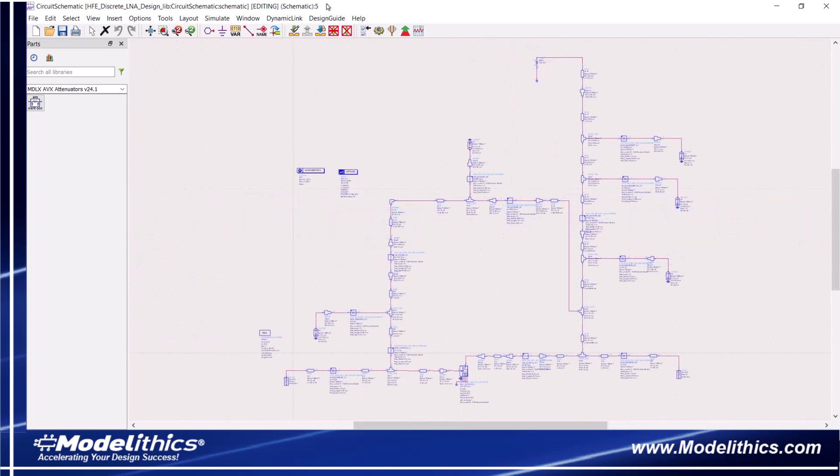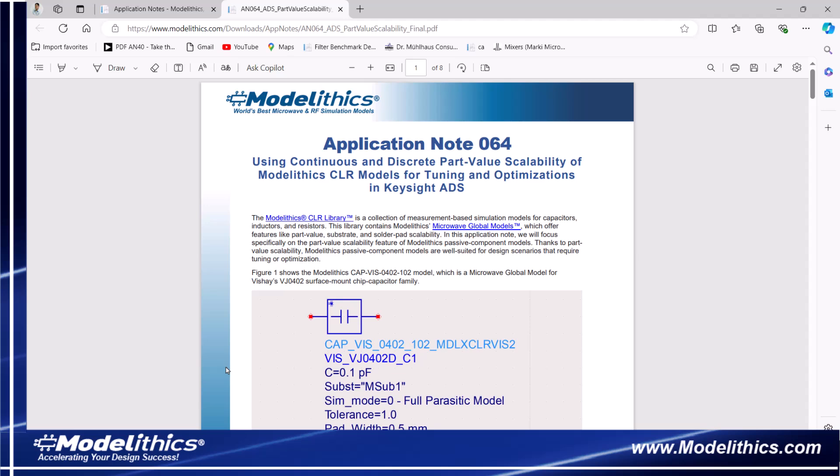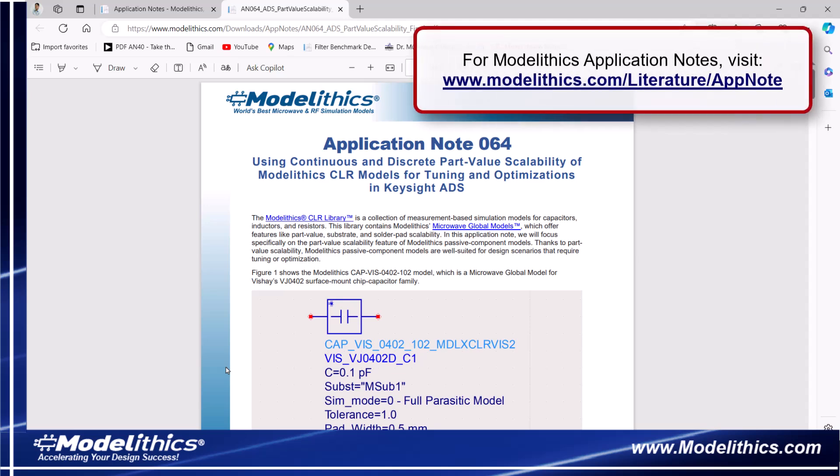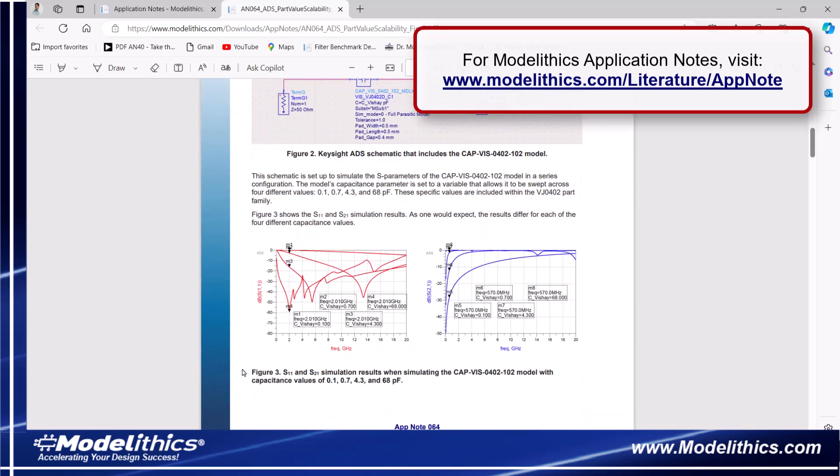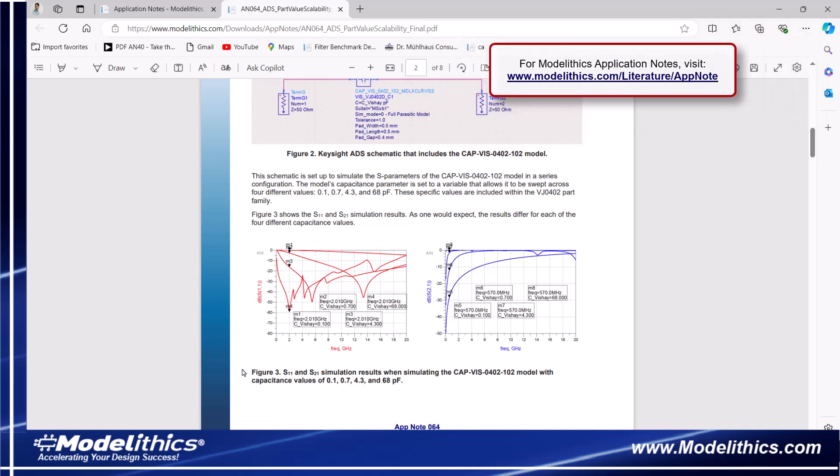Let's point out here that Monolithics microwave global models are used for all the RLC components. Now, a good resource that's relevant to this example is Monolithics Application Note 64. Here you'll learn how Monolithics microwave global models are well suited for design scenarios that require tuning or optimization.